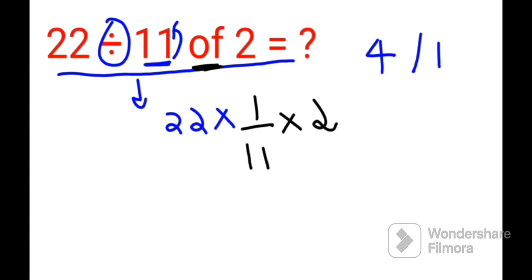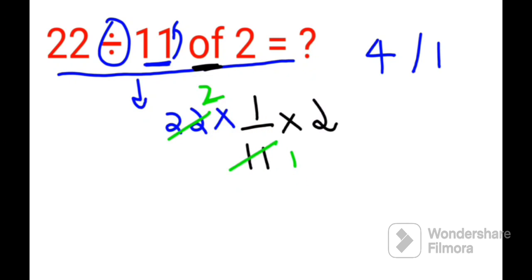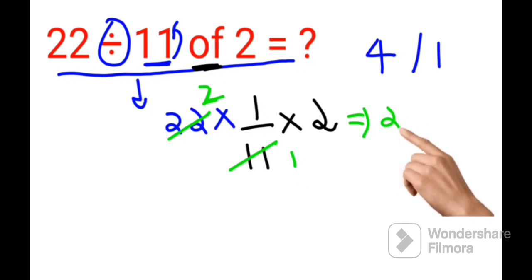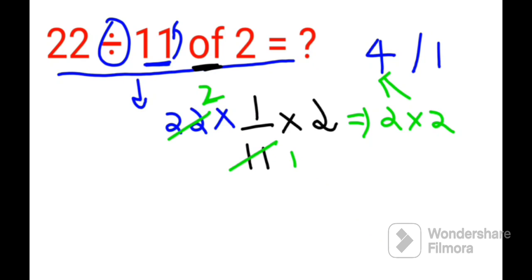We continue with 2. So 11 ones and 2 gets you 22, and your final answer is 2 into 2, which is nothing but 4. That is the right answer for this question. In case you have similar doubts, please let me know in the comment section. That's it for today — I will see you in the next video.